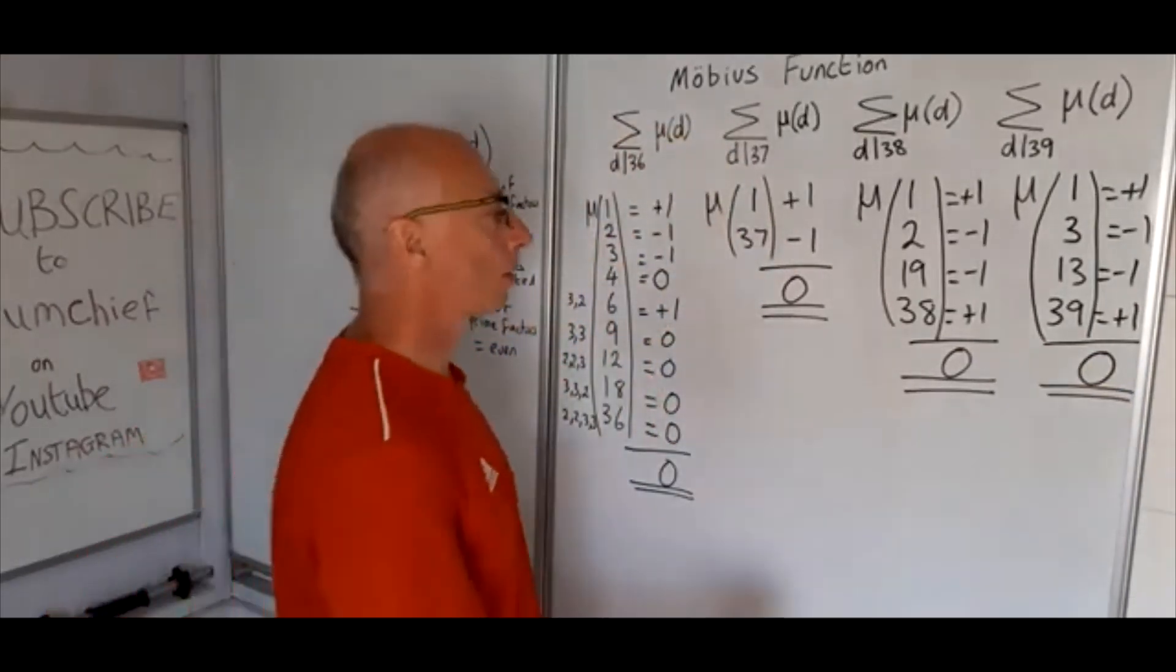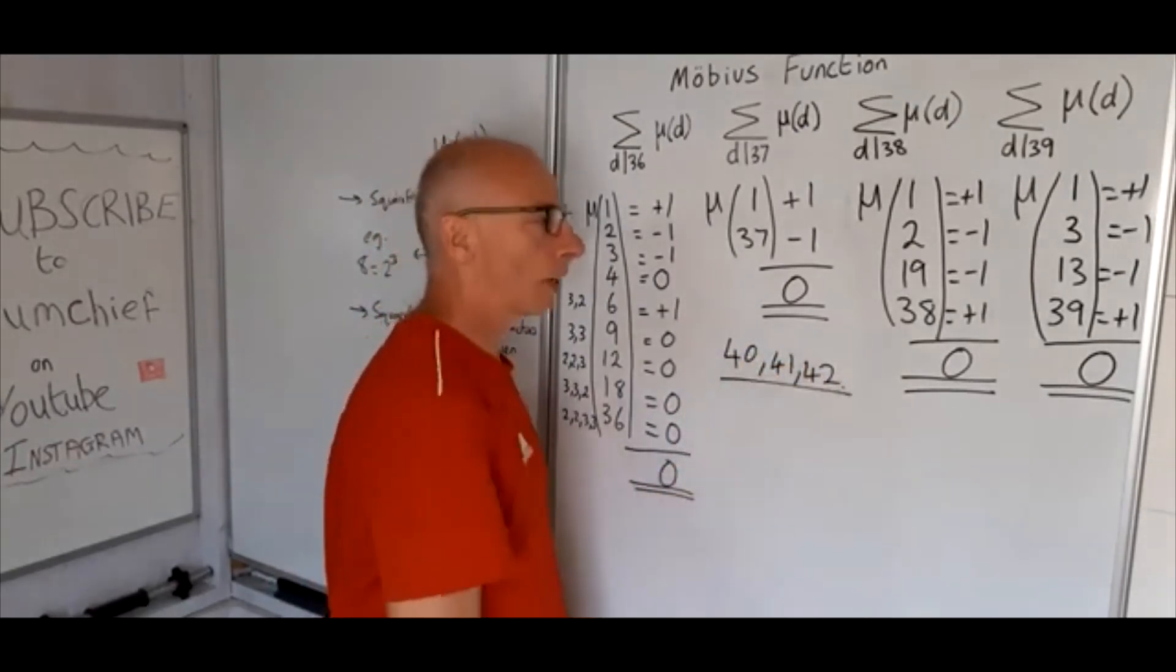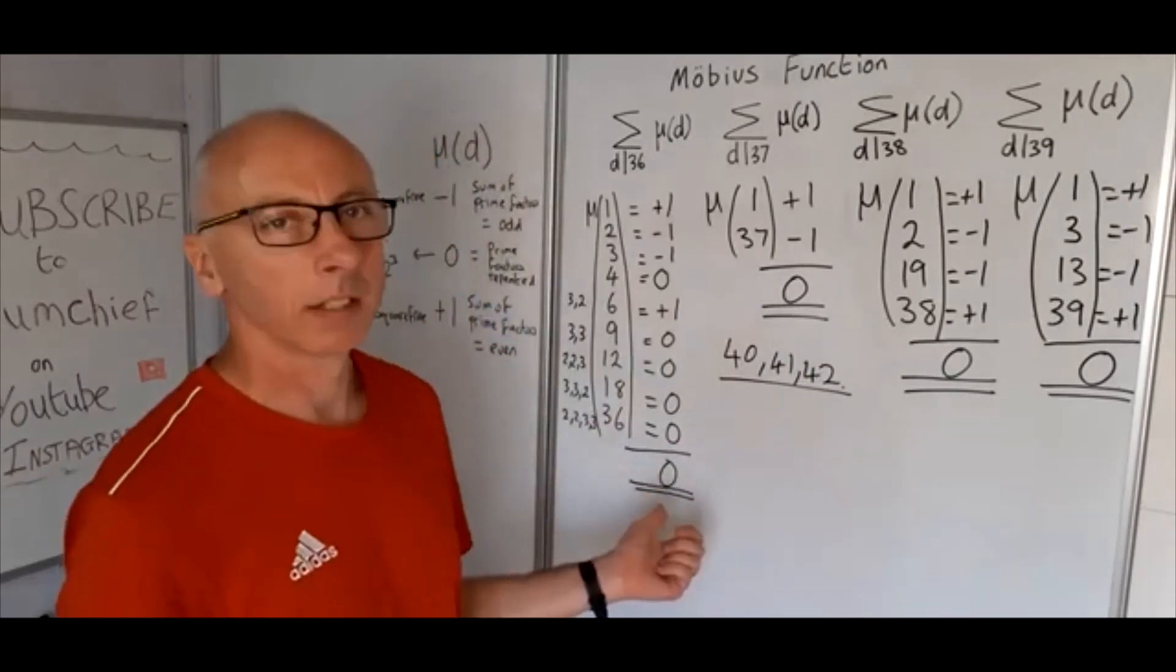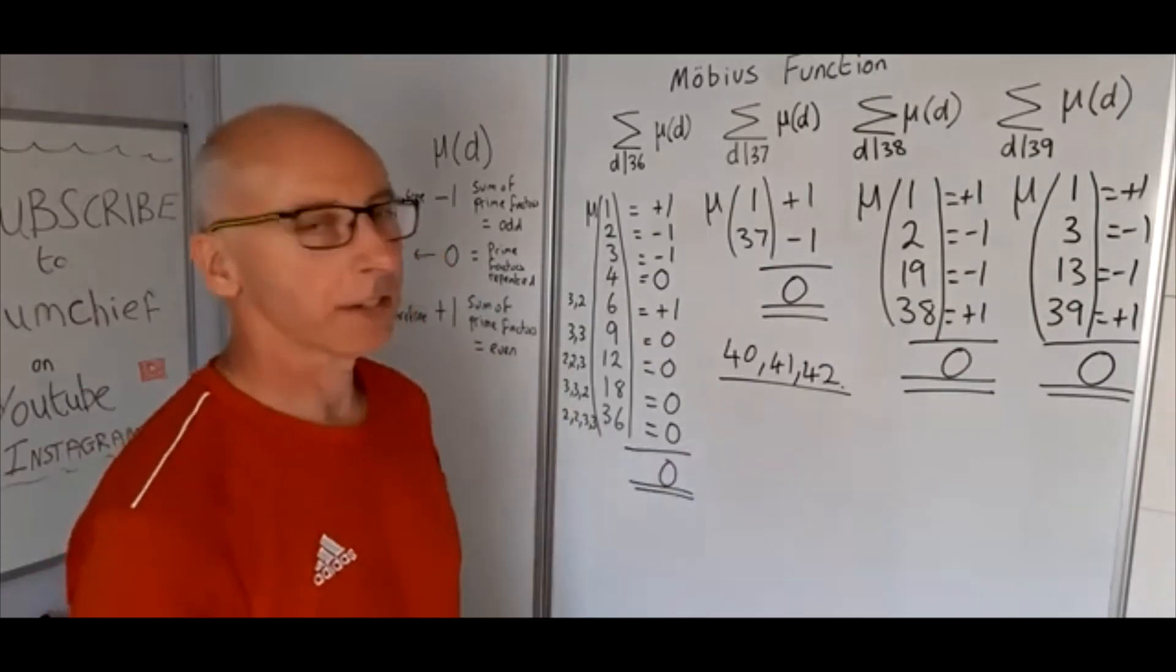Now if you want to try on your own the numbers 40, 41, 42, write down in the comments below what you get and let me know what you get. I've got a feeling you might get a 0, but let's see.